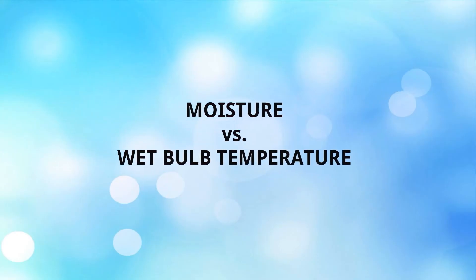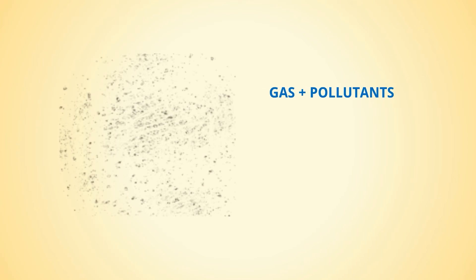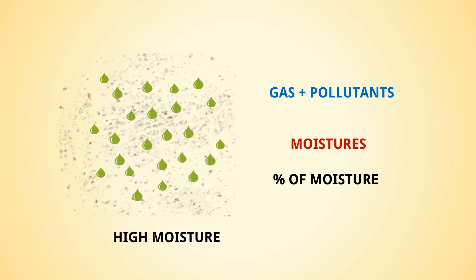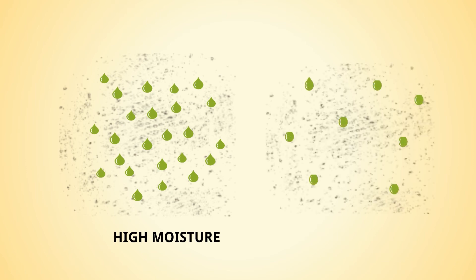Let us see the basics of moisture versus wet bulb temperature — we will try to find out the impact of moisture on wet bulb temperature. This is air, basically a mix of gas and pollutants, and it has moisture. The percentage of moisture depends on location — very less moisture in dry areas, and a very high percentage of moisture in coastal areas. We will differentiate between high moisture and low moisture with respect to wet bulb temperature.